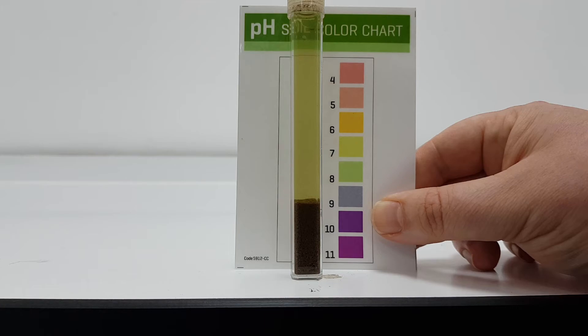The color closest to the liquid is the pH of the solution, and therefore the pH of the soil. Here, for example, we have a pH of 7.